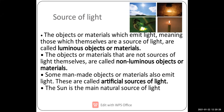Candles and torches are also non-luminous objects — they don't have their own source of light; they work on other substances. Candles and torches are examples of artificial sources of light — they are man-made. The Sun is the example of a natural source of light.